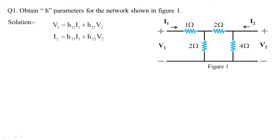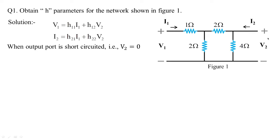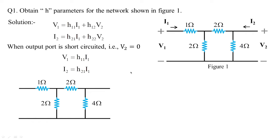From the basic matrix form of h parameters, to find h11 or h21 we must short-circuit the output port. When the output port is short-circuited, v2 = 0, and we get: v1 = h11·i1 and i2 = h21·i1. So I am going to take Figure 1, short-circuit it by making v2 = 0.